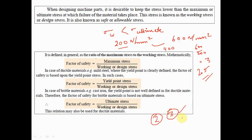For ductile materials, where the yield point stress limit is clearly defined, factor of safety = yield point stress / working stress. For brittle materials such as cast iron, where the ultimate stress point is defined, factor of safety = ultimate stress / working stress.